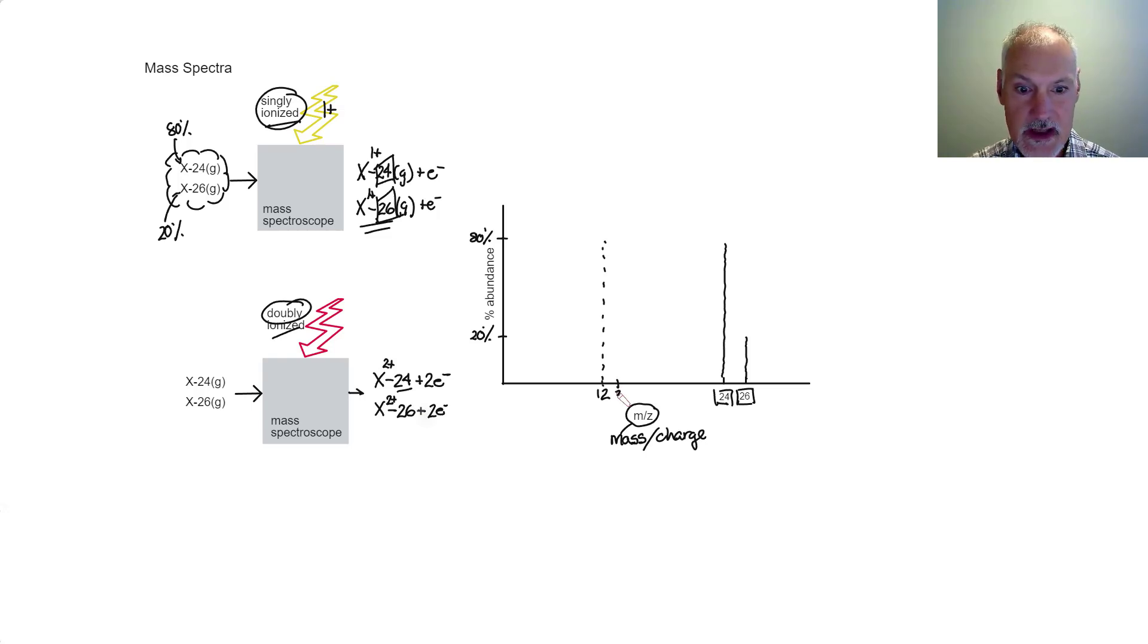And the other peak would have been at 13, because 26 divided by two, and it would still be here. So this is the graph I would have gotten if it was doubly ionized and this one singly ionized.